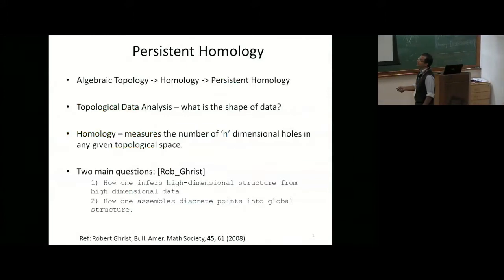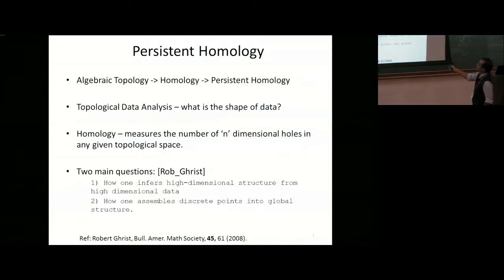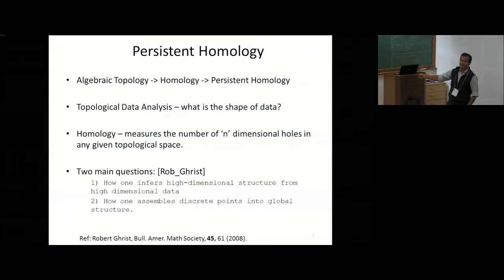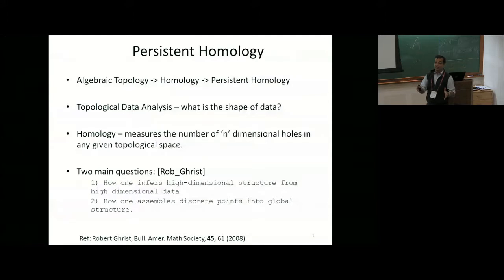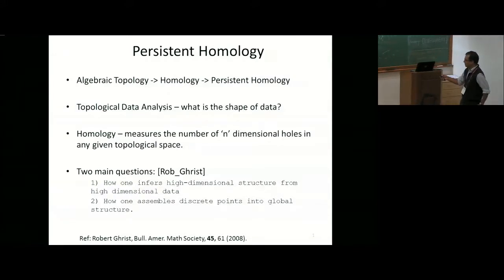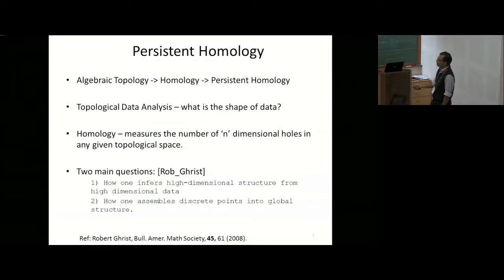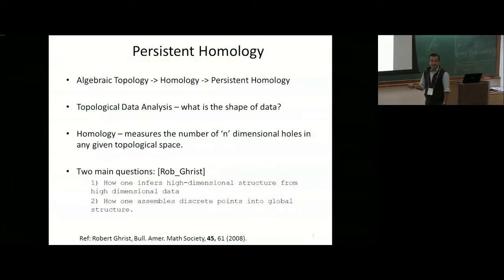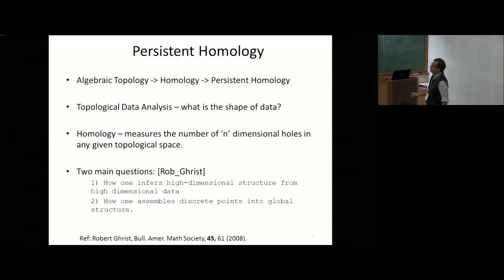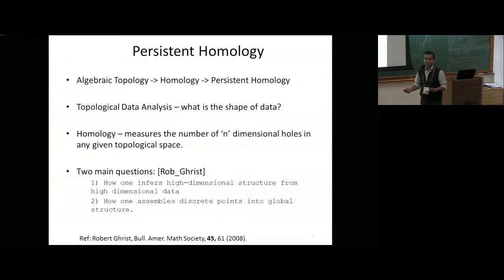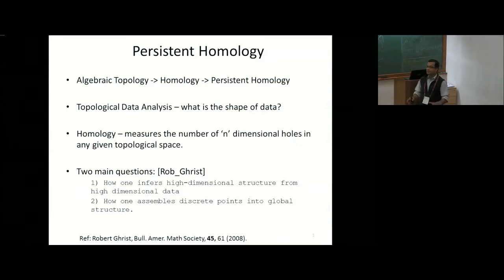Coming to the current context of this talk — what is persistent homology? Persistent homology has its roots in homology, which has its roots in algebraic topology. Topological data analysis asks questions about the shape of data. Homology, to put it roughly, measures the number of n-dimensional holes in any given topological space. There are two key questions attributed to Robert Greist: how one infers high-dimensional structure from high-dimensional data, and how one assembles these discrete points into a global structure.